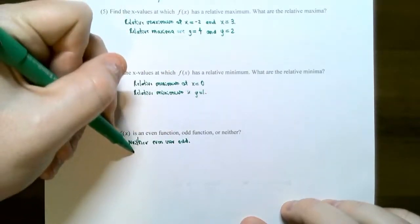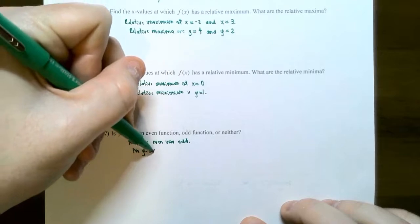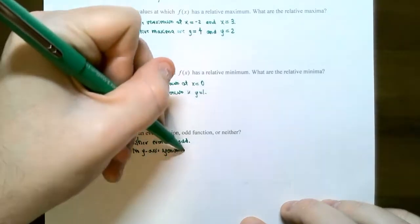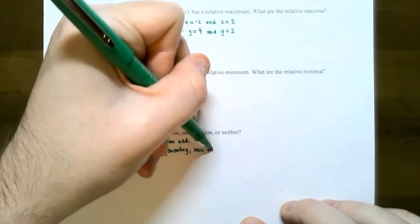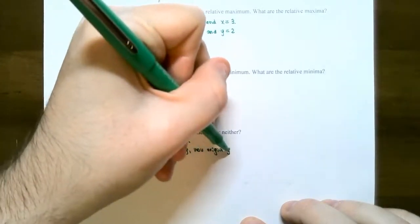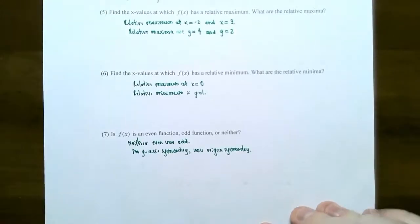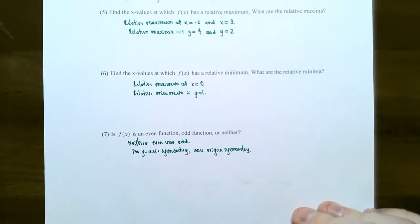This function is neither even nor odd — no y-axis symmetry, nor origin symmetry. This was a good problem that summarized everything we learned in the previous two sections: increasing, decreasing, constant, relative max, relative min, symmetry, when the graph is on or crosses the x-axis, and where the graph crosses the y-axis for intercepts.